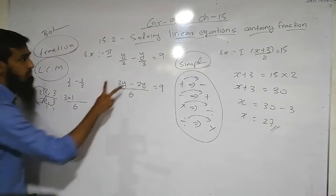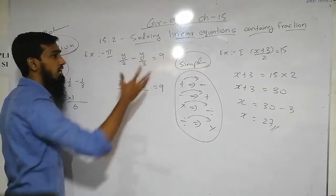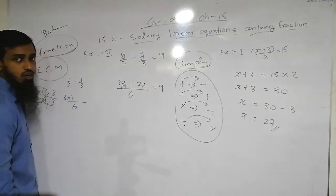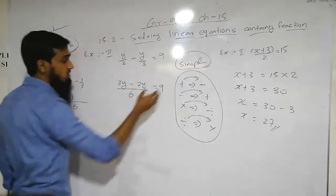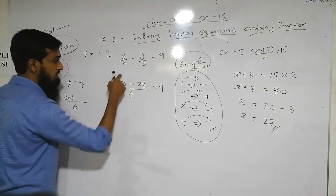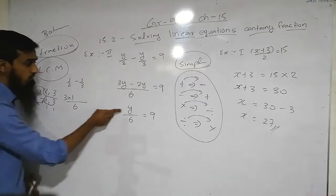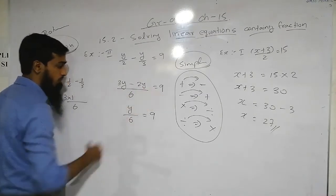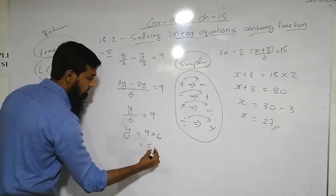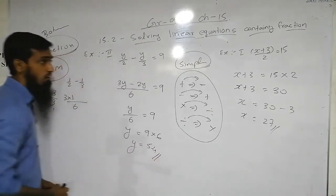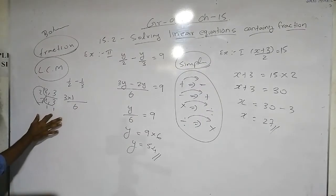Once we apply LCM and the denominator becomes the same for both fractions, we can simplify. So 3y − 2y = y, giving us y/6 = 9. Moving the 6 to the other side — division becomes multiplication — so y = 9 × 6 = 54.